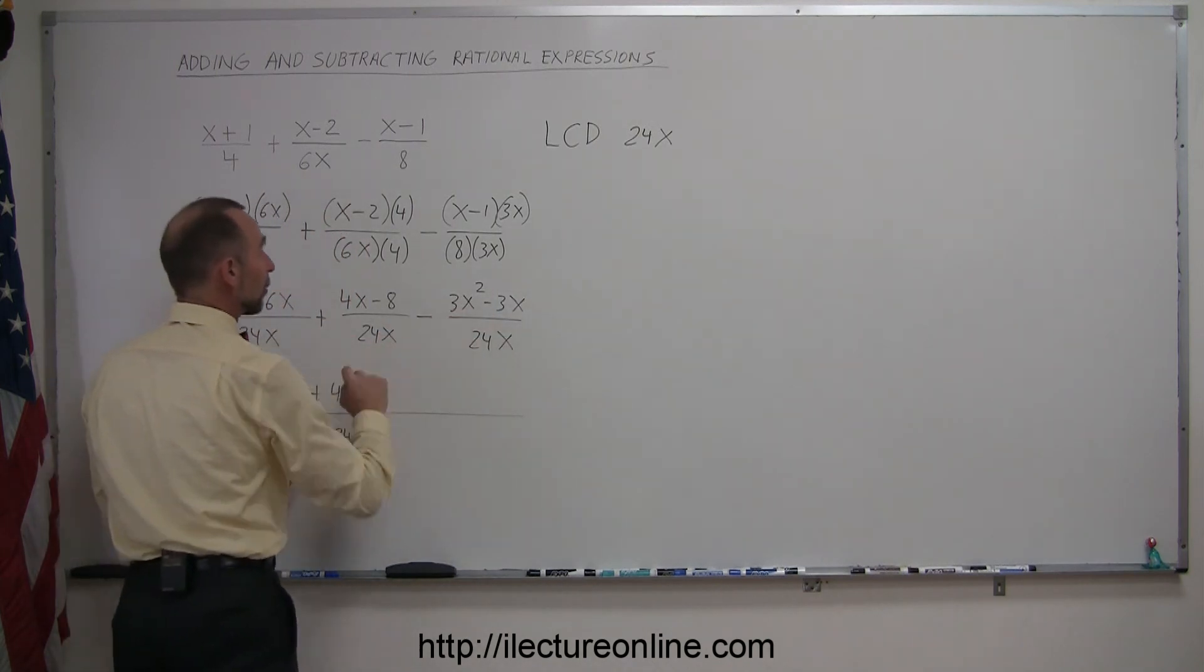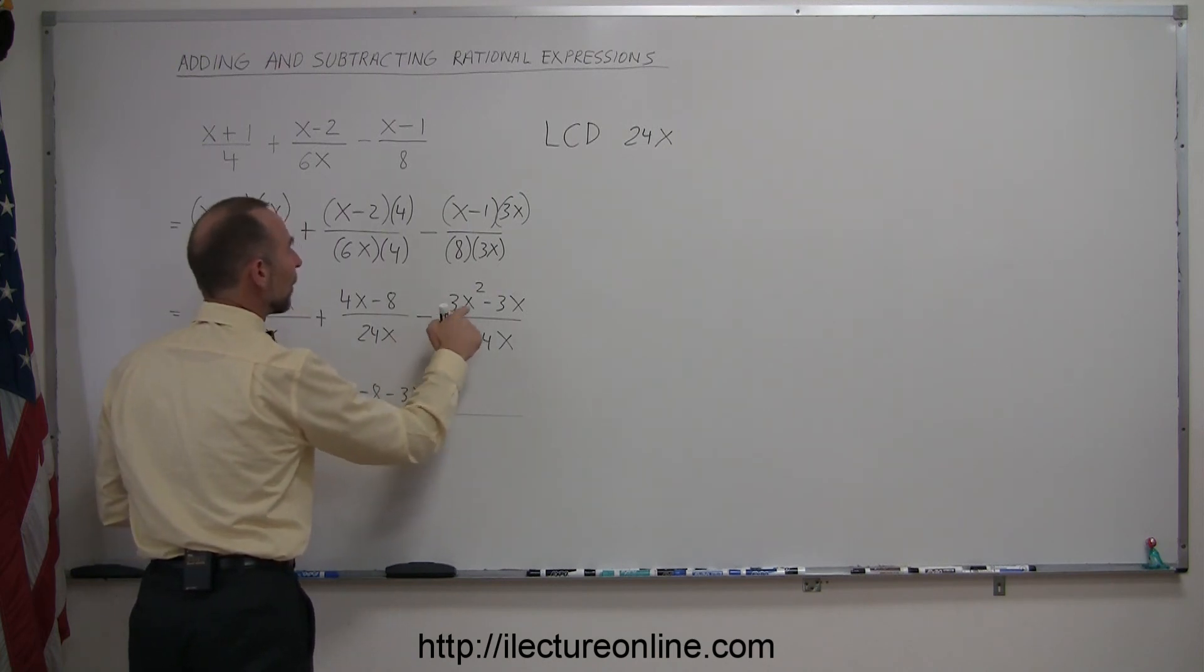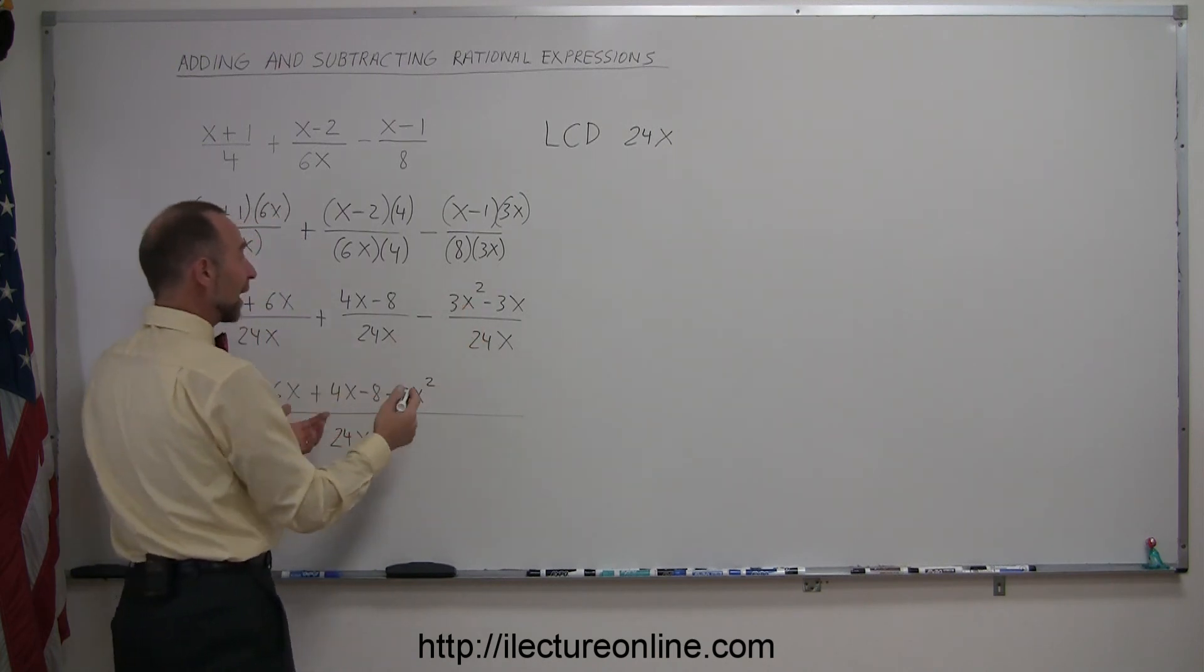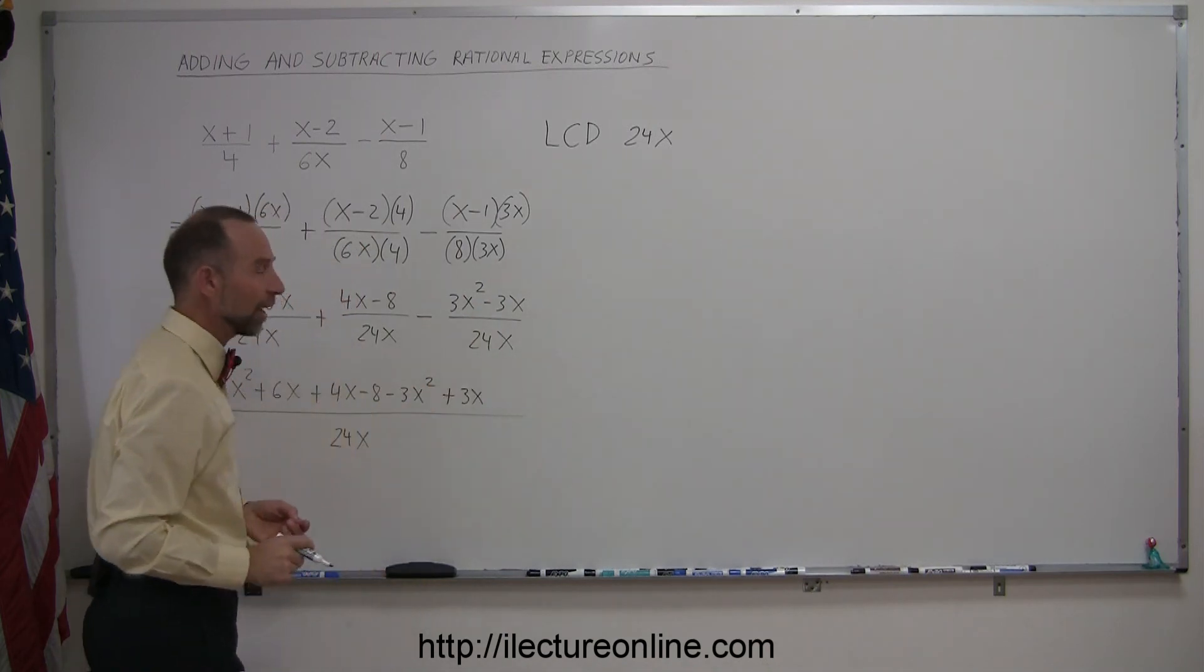So when we subtract, we have minus the 3x squared, and minus a minus gives us a positive, they cancel out, so this becomes a plus 3x. So be very careful about those signs.